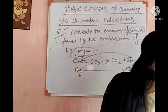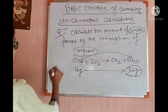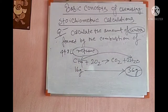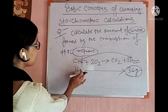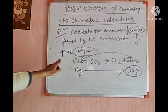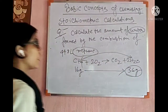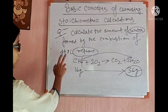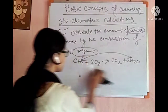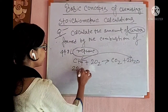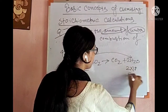Suppose the question changes: calculate the amount of water formed by the combustion of 44.8 liters of methane. Previously it was 16 grams; now it is given with respect to volume, so apply the third method — with respect to volume. From the balanced equation: 22.4 liters of methane gives 2 × 18 = 36 grams of water.